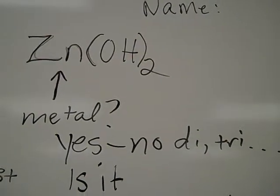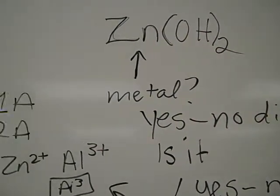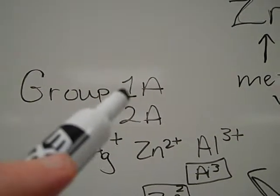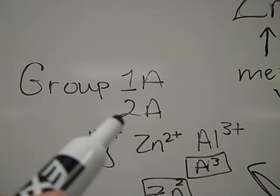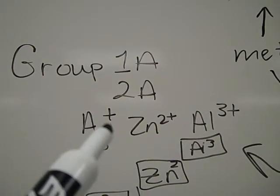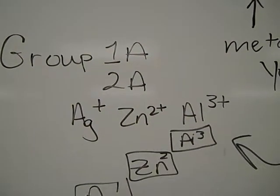We need to ask another question about Zn. Is it one of the ones that everybody knows the charge? The ones that everyone knows the charge are the guys in group 1a are plus 1, the elements in group 2a are plus 2. We know that silver is always plus 1, zinc is always plus 2, aluminum is always plus 3.